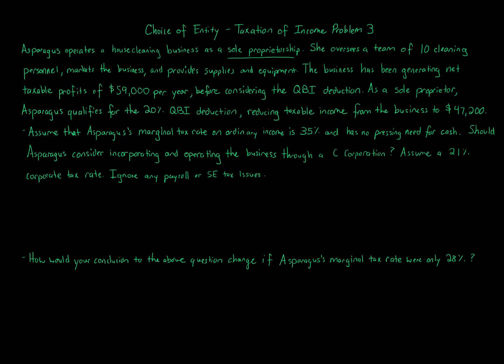This question is looking at it through the lens of operating a pass-through like an LLC. A single member LLC would have the same consequences as a sole proprietorship in this situation. We're told to assume that Asparagus's marginal tax rate on ordinary income is 35%, which is important. She has no pressing need for cash, which is important because if you're a C corporation, the second level of tax is when the cash is distributed out. Ignore payroll and self-employment tax issues.